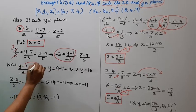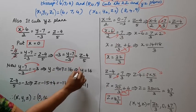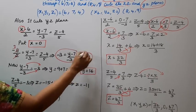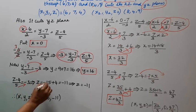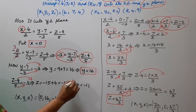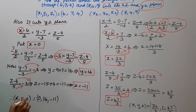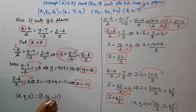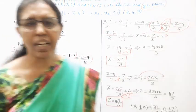From y minus 7 by minus 3 equal to minus 3: y minus 7 equals minus 3 into minus 3, which is 9. So y equals 9 plus 7 equals 16. From z minus 4 by 5 equal to minus 3: z minus 4 equals minus 15, so z equals minus 15 plus 4 equals minus 11. The line cuts the YZ plane at x = 0, y = 16, z = minus 11.